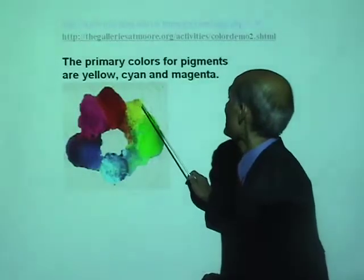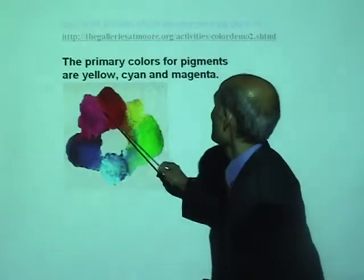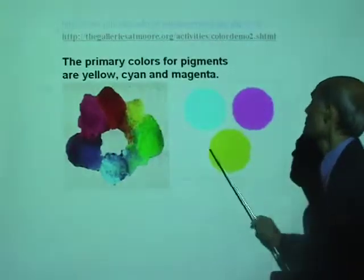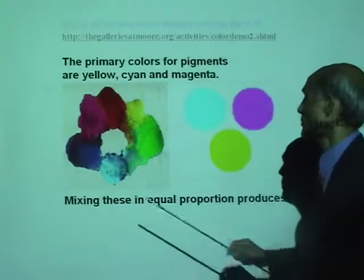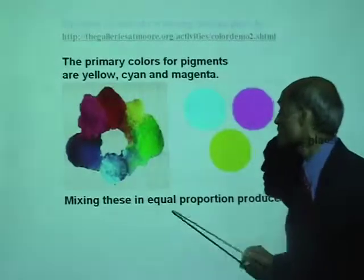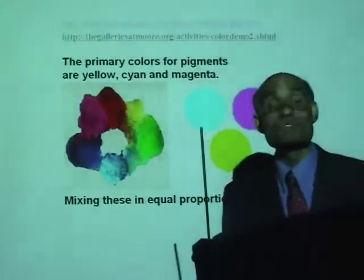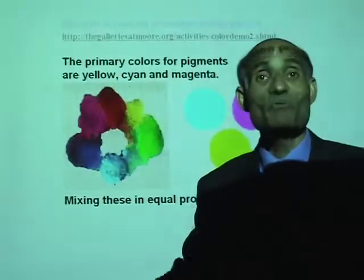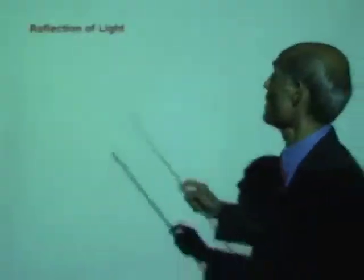What are they? Yellow, cyan, and magenta — these are the primary colors for pigments. Mixing these in equal proportions will produce black. Those who mix your paints for painting, you know that this is true.